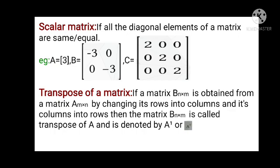Coming to the scalar matrix: if all the diagonal elements of a matrix are the same or equal, then it is said to be a scalar matrix. The diagonal elements should be the same — they may be real or imaginary. Comparing with the identity matrix, the diagonal elements must be only 1 with no imaginary or complex numbers. But in a scalar matrix, the diagonal elements may be any number as long as they are all the same.